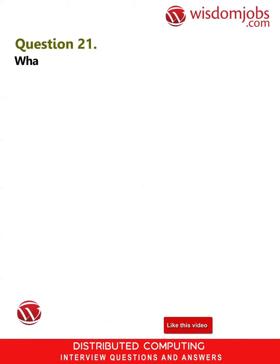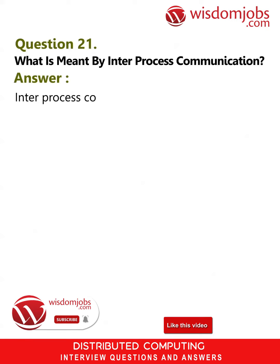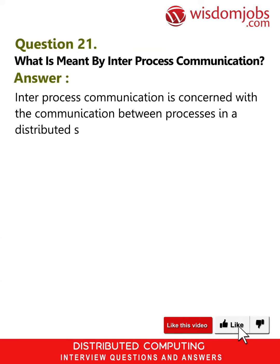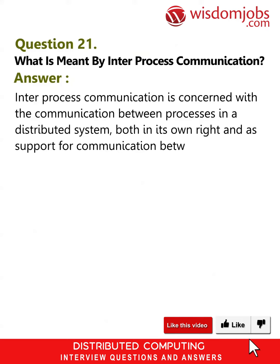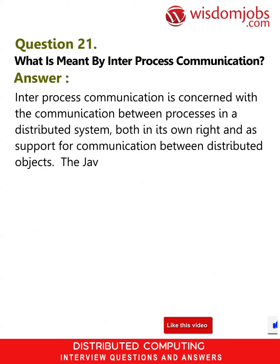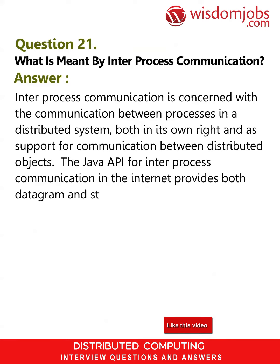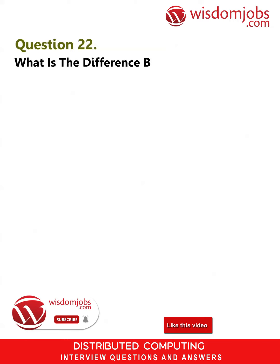Question 21: What is meant by inter-process communication? Answer: Inter-process communication is concerned with the communication between processes in a distributed system, both in its own right and as support for communication between distributed objects. The Java API for inter-process communication in the internet provides both datagram and stream communication.